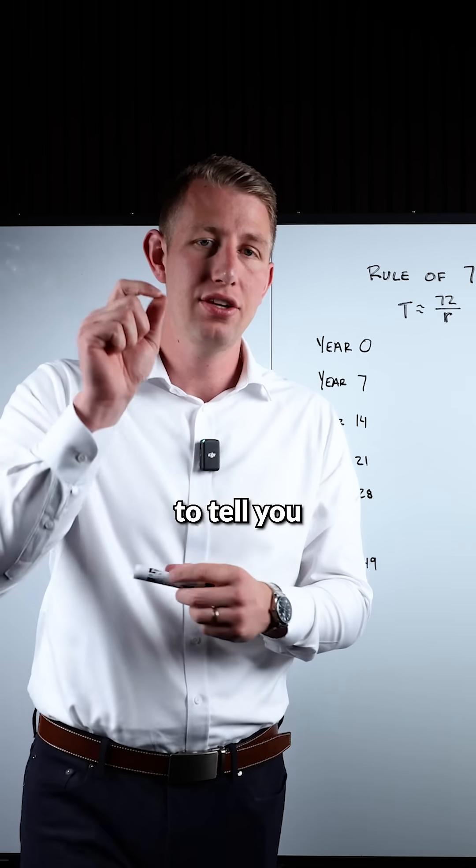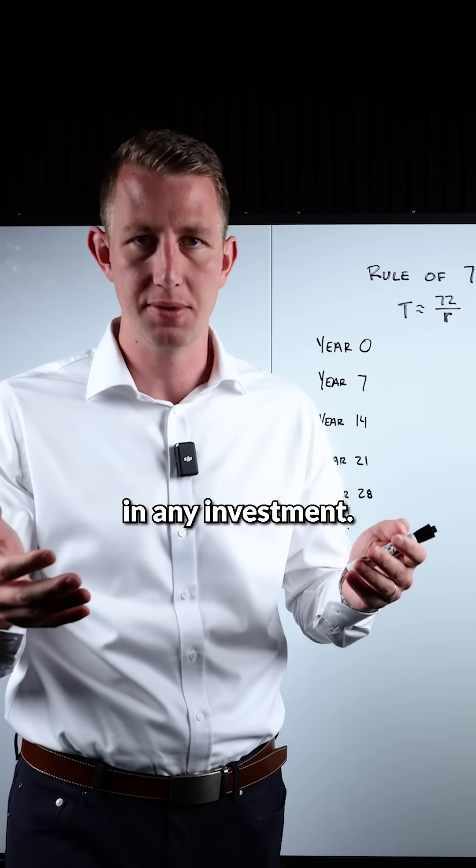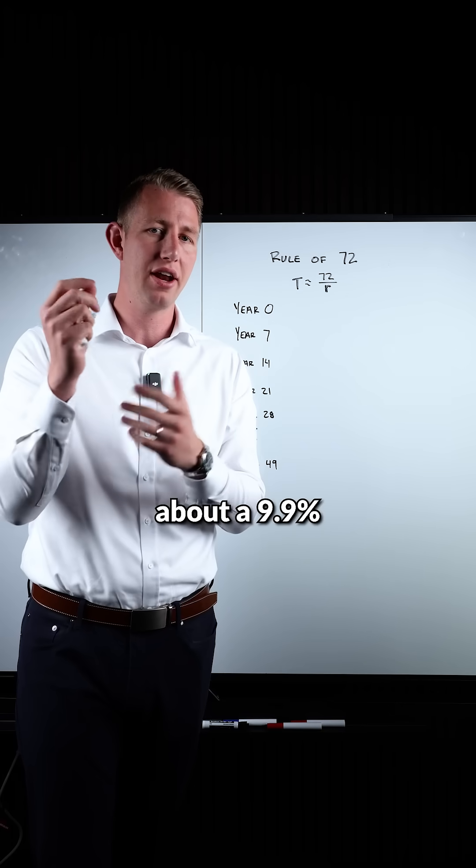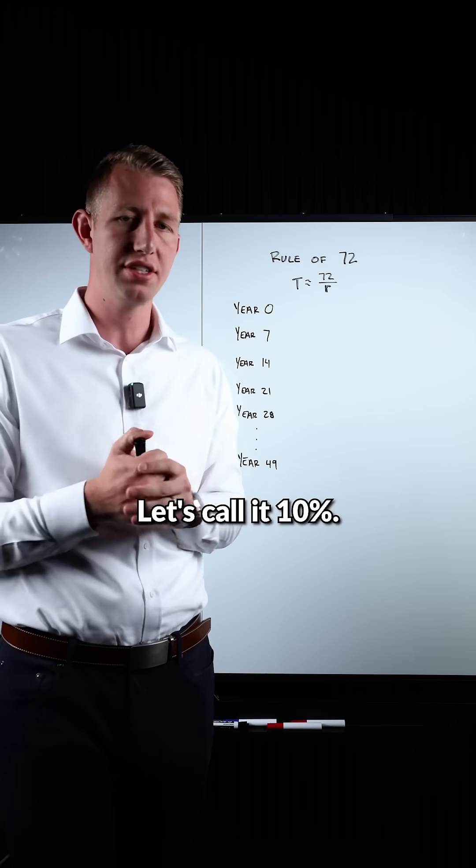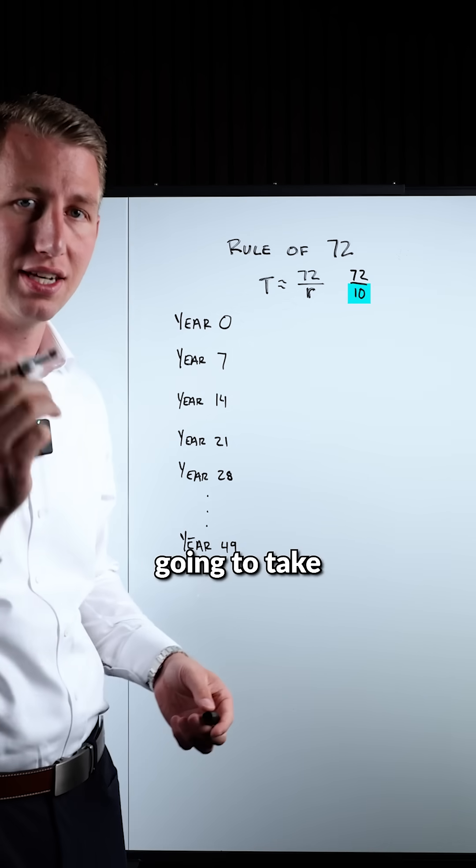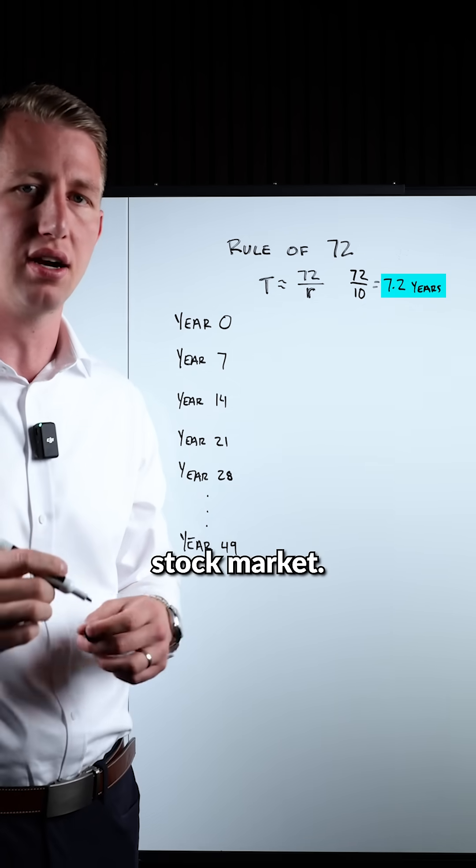What the rule of 72 is, is it's going to tell you exactly how long it takes you to double your money in any investment. Let's use the stock market. Over the last hundred years, the stock market has averaged about a 9.9% return. Let's call it 10%. If you plug in a 10% return over 72, it's going to tell you that it's going to take you 7.2 years to double your money inside the stock market.